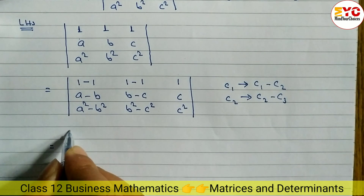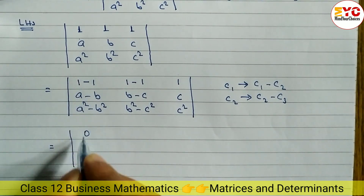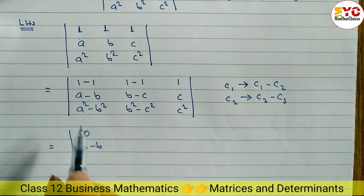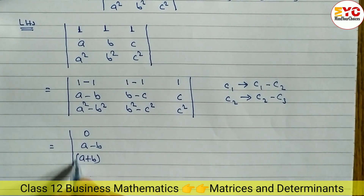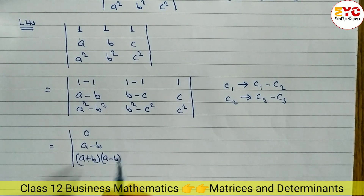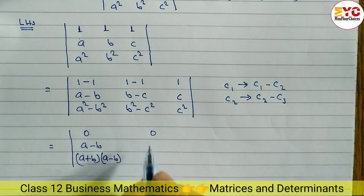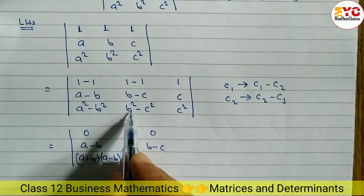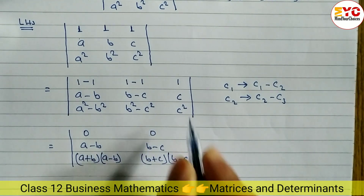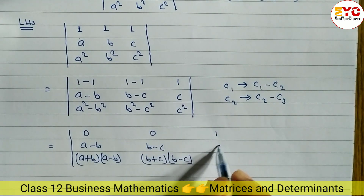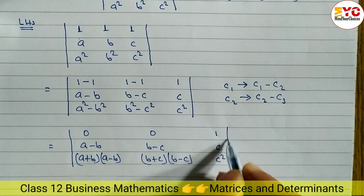Now 1 minus 1 equals 0; A minus B remains; and A square minus B square uses the formula (A plus B)(A minus B). Similarly, 0; B minus C; and B square minus C square uses the formula (B plus C)(B minus C). The third column remains the same: 1, C, C square.